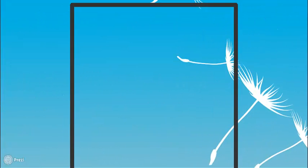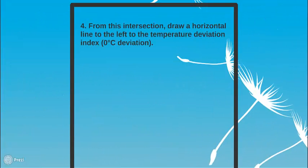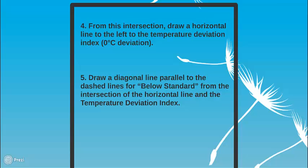Fourth step: from this intersection, draw a horizontal line to the left to the temperature deviation index. Fifth step: draw a diagonal line parallel to the dashed lines for below standard from the intersection of the horizontal line and the temperature deviation index.